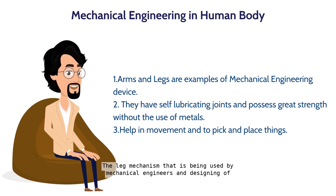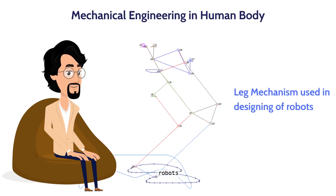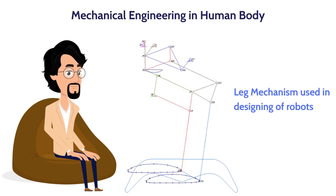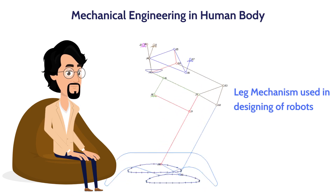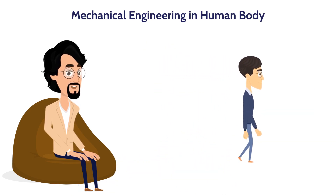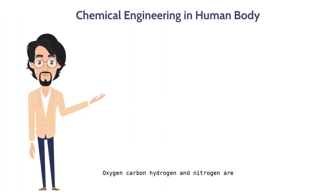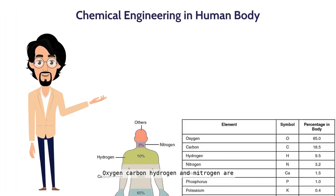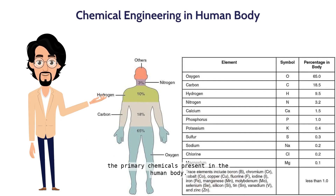The leg mechanism being used by mechanical engineers in the designing of robots has been derived from the human leg. Without mechanical engineering functioning in our body, we would not be able to move.